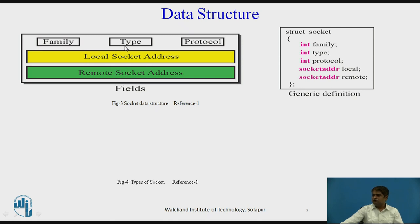There are five fields in the data structure. The generic definition shows a structure with: family, type, protocol, local socket address, and remote socket address. The first field is family, which defines the protocol group — either IPv4, IPv6, UNIX domain protocols, and so on. The family constants used in TCP/IP protocol suite are AF_INET for IPv4 protocol and AF_INET6 for IPv6 protocol.